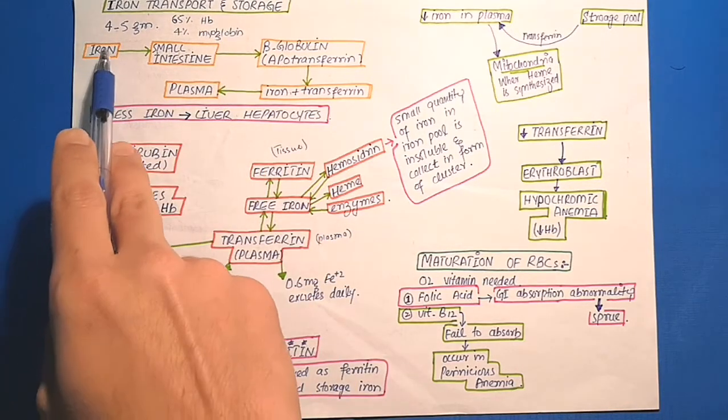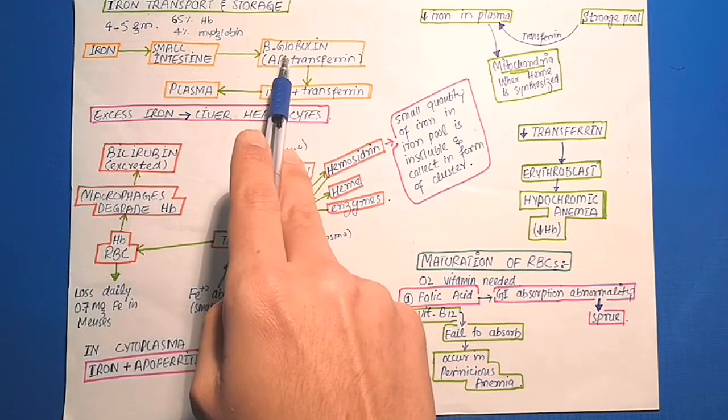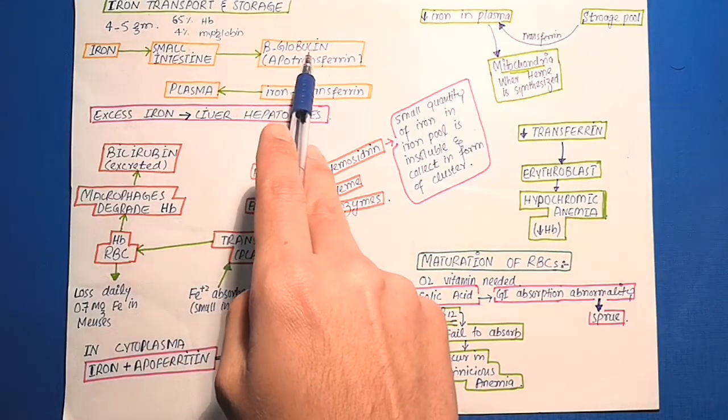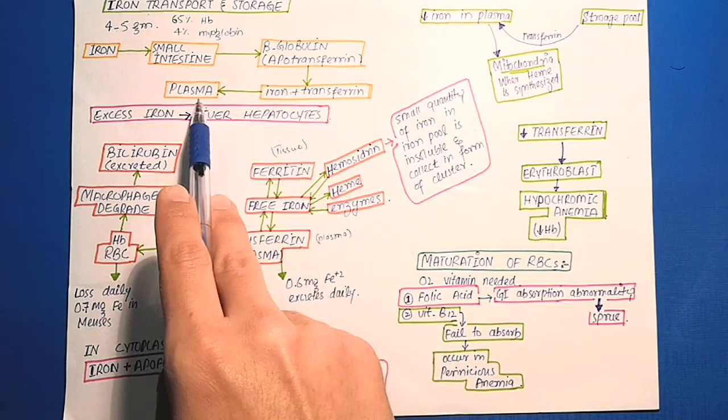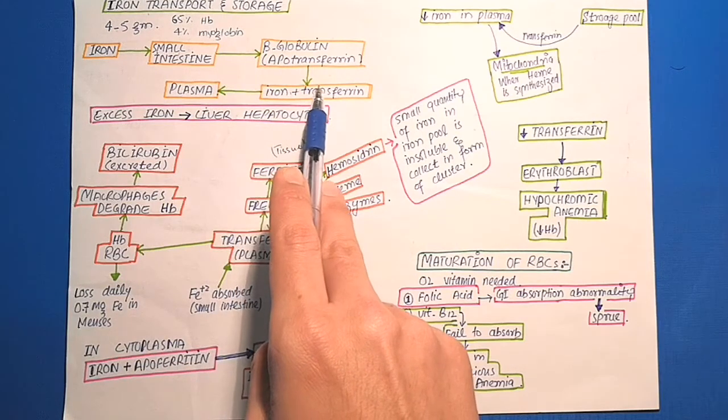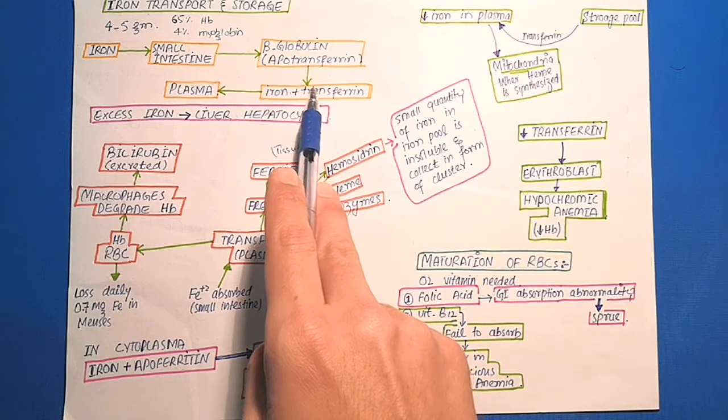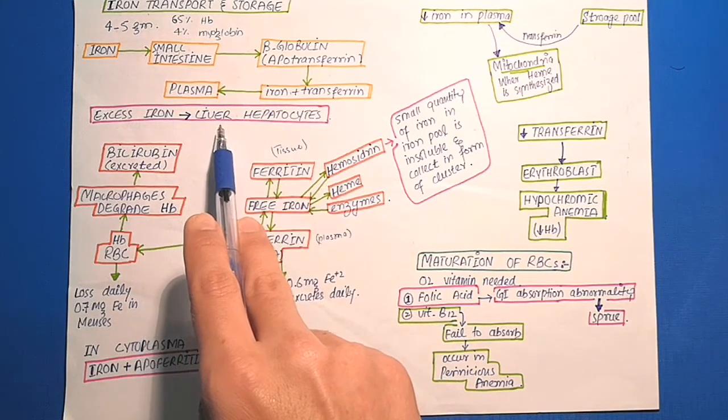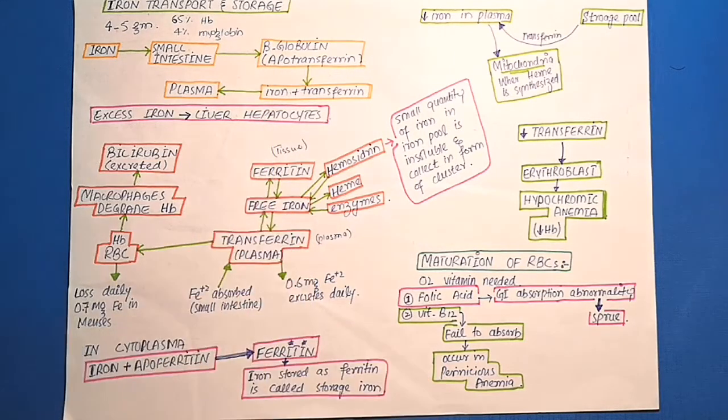When iron is absorbed from the small intestine, it combines with the beta-globulin apotransferrin to form transferrin, which is then transported in the plasma. This iron is loosely attached to the transferrin and can be released at any point in the body. The excess iron is deposited into the liver hepatocytes and a lesser amount in reticuloendothelial cells in the bone marrow.